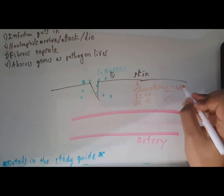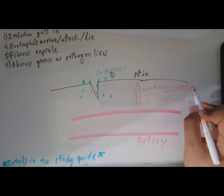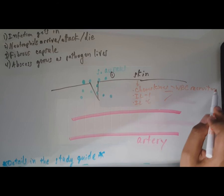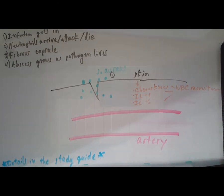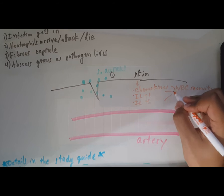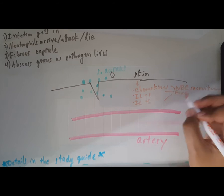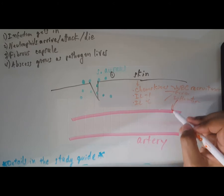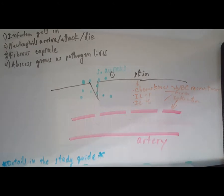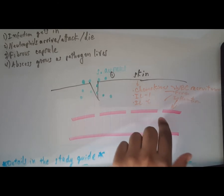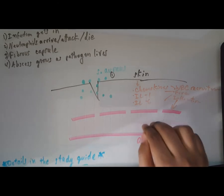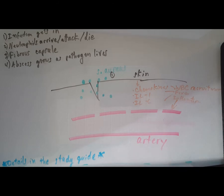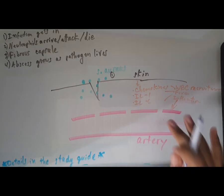These three things are going to recruit white blood cells and cause fever and inflammation. All these things are going to affect the artery - they're going to make it more porous so white blood cells within the artery can come out to the infection.